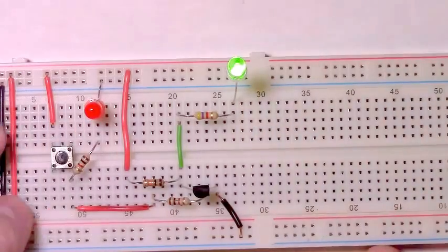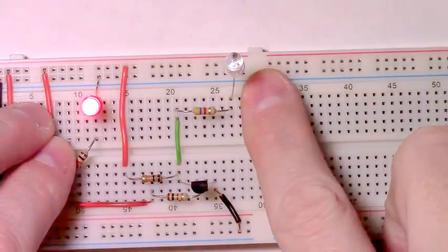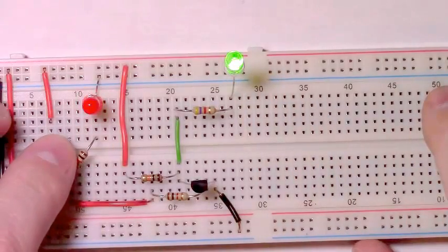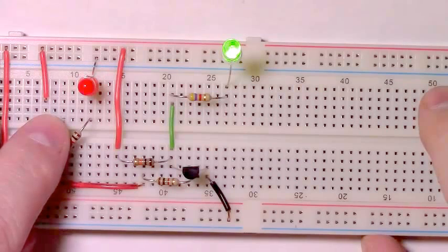Input low, output high. When we push our button and our input goes high, our output goes low. The hallmark behavior of a NOT gate. Neat.